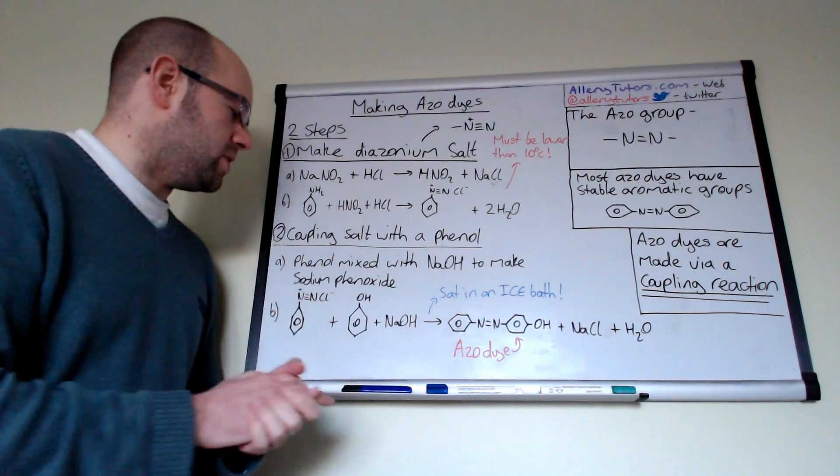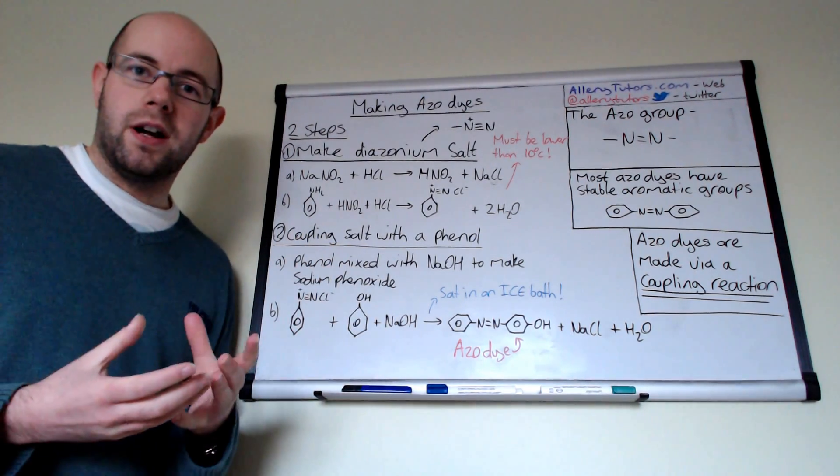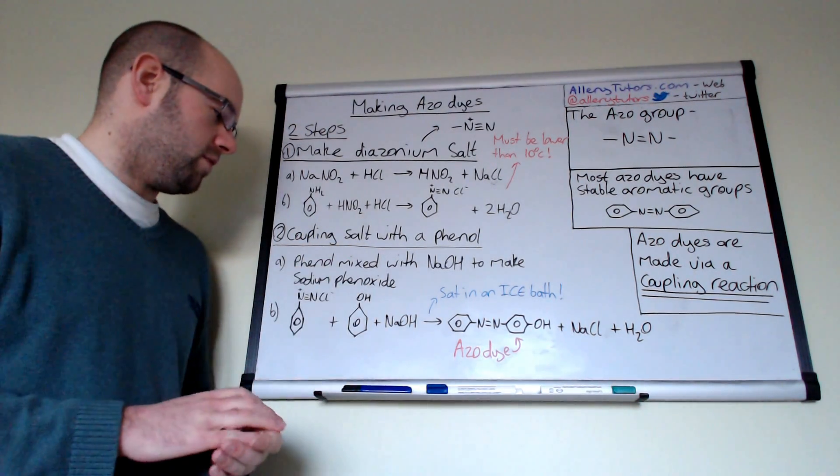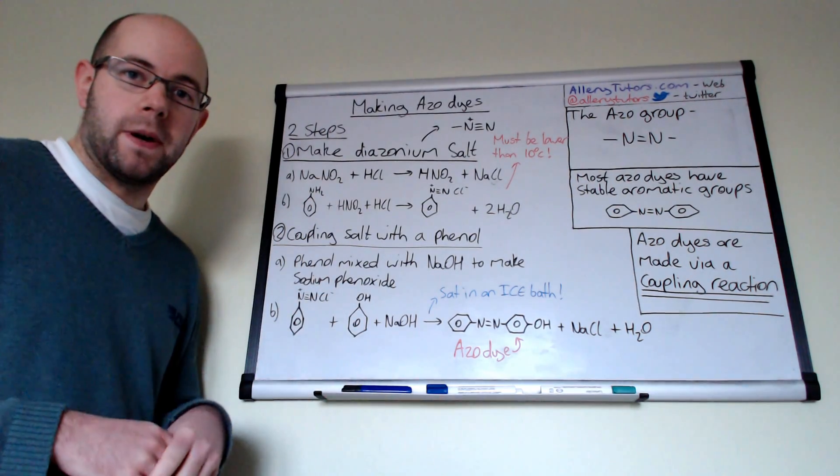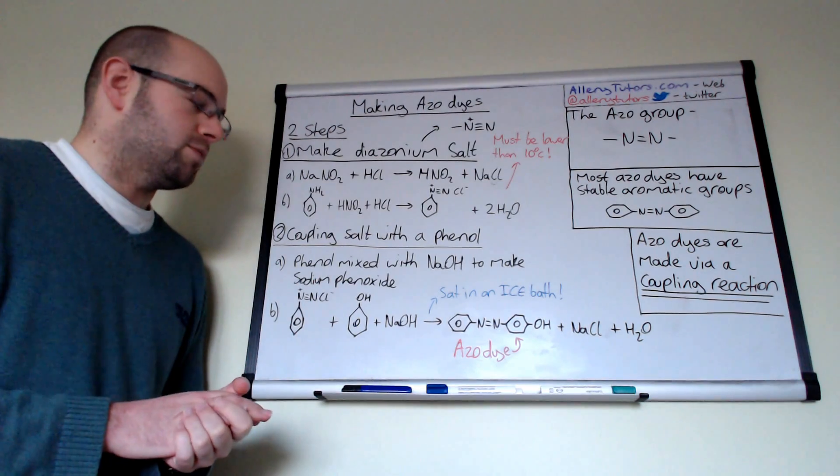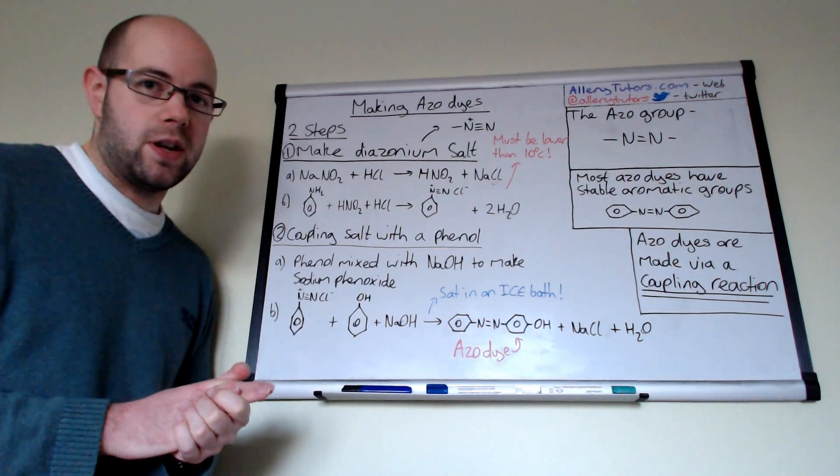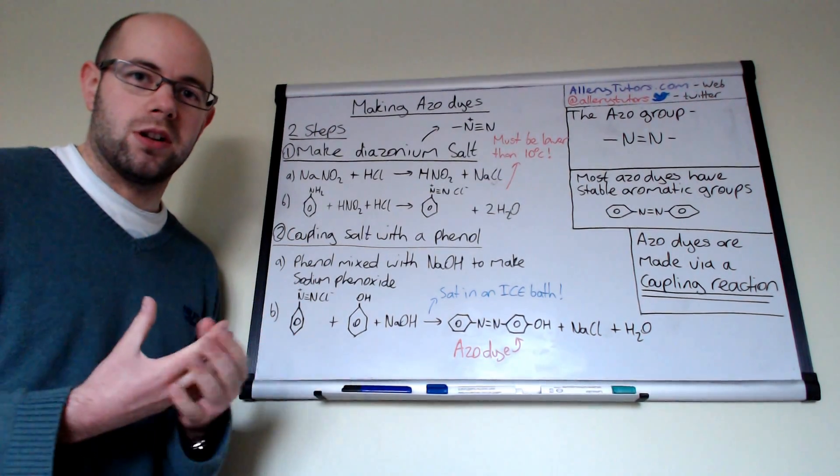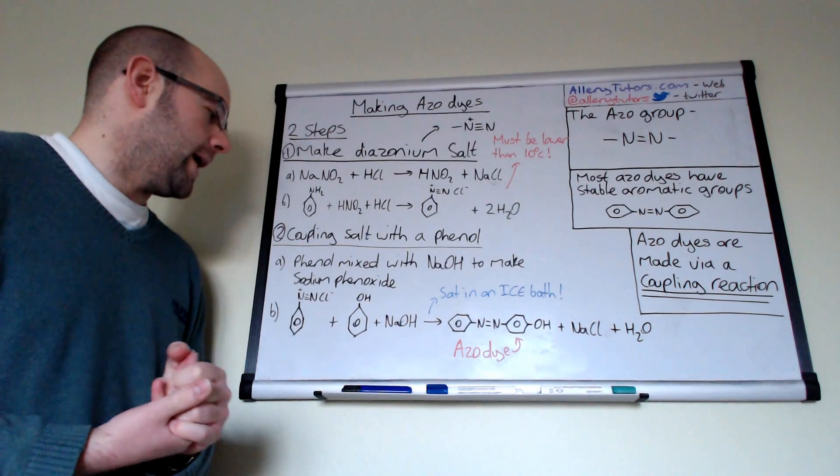The first thing we need to do is we need to get our phenol. Phenol, if you can remember, is the benzene with an OH group on it. What we have to do is actually react it with sodium hydroxide to make sodium phenoxide first, which is a soluble salt.